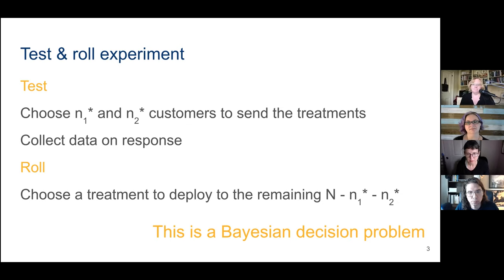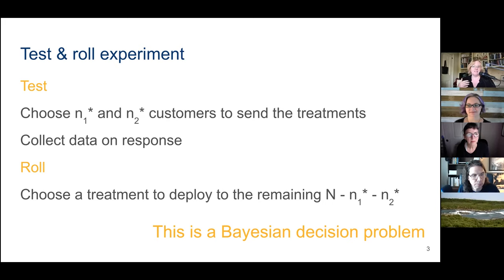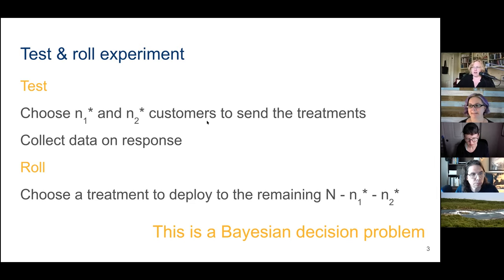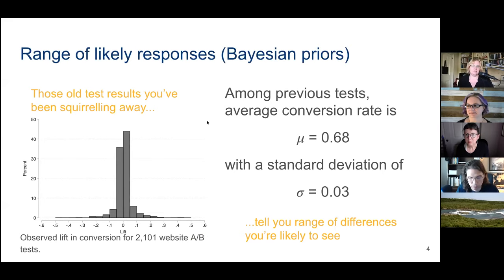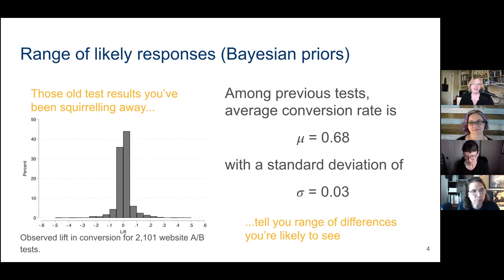It turns out this is a Bayesian decision problem. The idea is that we're going to make a decision that maximizes the profits we're going to earn — that's why we call the paper 'profit-maximizing A/B testing.' We're going to choose N1 and N2 in a principled way based on profit. To get traction on that problem, I need to know something about how the treatments work.